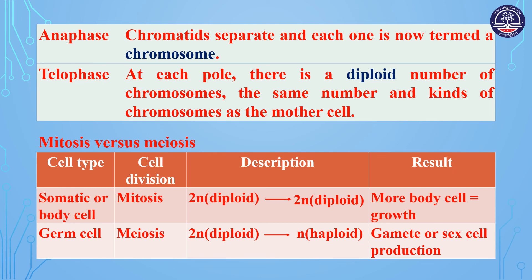Telophase: at each pole, there is a diploid number of chromosomes — the same number and kinds of chromosomes as the mother cell.